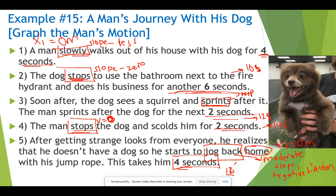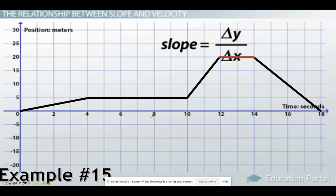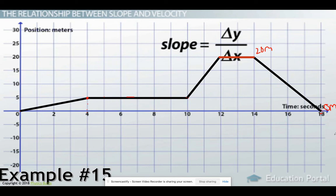So let's see what that looks like on our graph. We start at the origin — zero, zero — moving in the positive direction with a less steep slope for four seconds. From four to ten seconds the dog is stopped, so we have a slope of zero. Then the dog sees a squirrel and sprints in the positive direction with the steepest slope. The dog is scolded for two seconds, staying stationary at that position. Then we move from a position of 20 meters back to the origin over four additional seconds, for a total of 18 seconds.